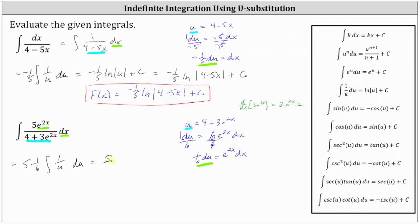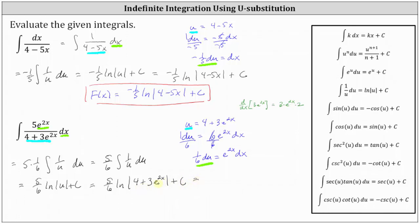Simplifying, we have 5/6 times the integral of 1 divided by u du, which we know is equal to 5/6 times the natural log of the absolute value of u plus C. In our case, this is 5/6 times the natural log of the absolute value of 4 plus 3 times e raised to the power of 2x plus C. In this case, we can drop the absolute value because the quantity 4 plus 3 times e to the power of 2x is always positive. So we have 5/6 times the natural log of the quantity 4 plus 3 times e to the power of 2x plus C, which we can label as F(x).